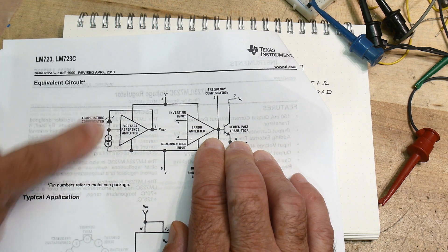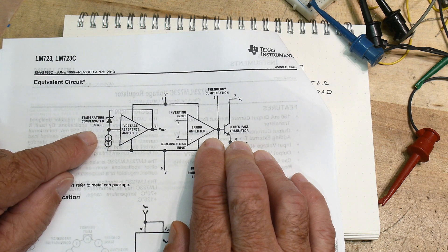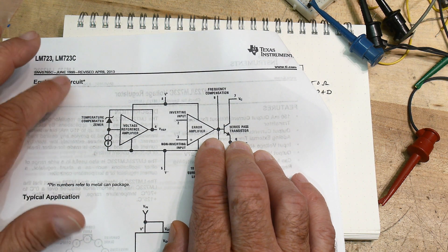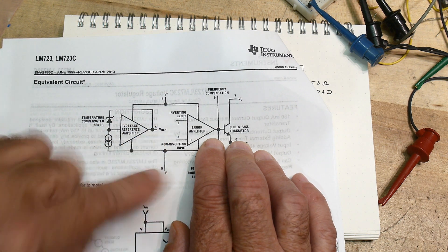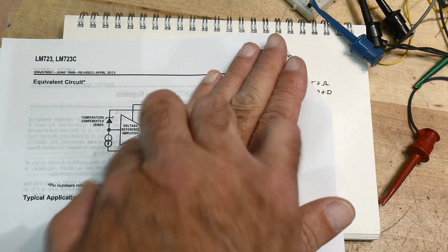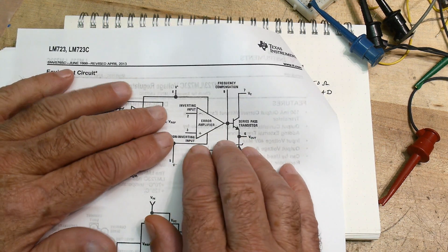That part just makes it fancier, but it's just a voltage derived from a zener diode and it's temperature compensated, so that's fancier too. It gives you a voltage reference and it comes out on a pin, so you don't even need to use the rest of the circuit if you just need a voltage reference.